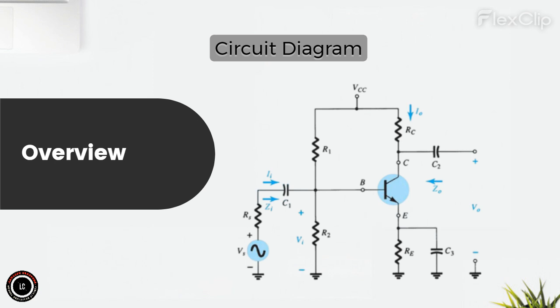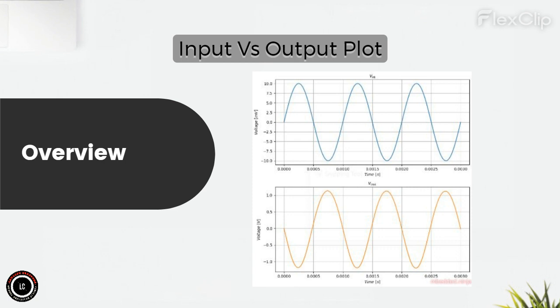These different portions and components work together to achieve signal amplification in a common emitter amplifier. The input stage handles the incoming signal, the amplification stage boosts the signal, and the output stage presents the amplified signal. Proper biasing and feedback mechanisms contribute to stable and linear amplification. Regarding the input versus output voltage plot, also known as the VO/VI plot: in a CE amplifier, the input and output voltage waveforms are not in phase. There is generally a 180-degree phase shift between input and output signals, which is a characteristic result of the transistor's amplification process.